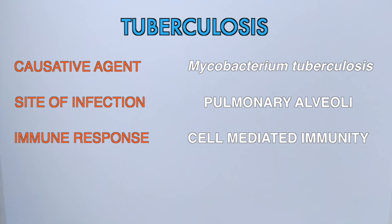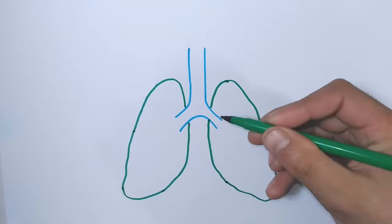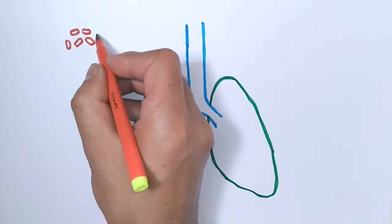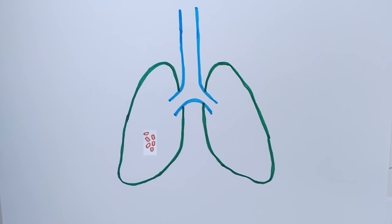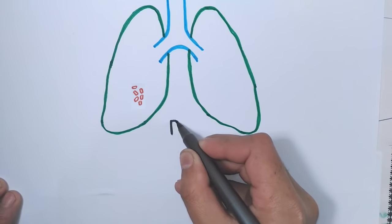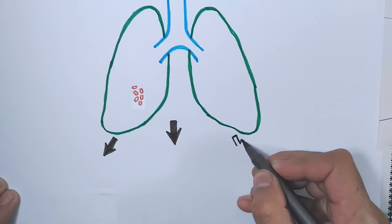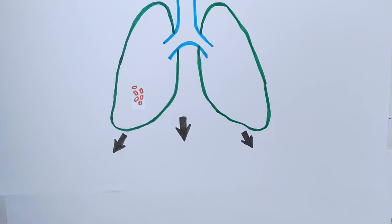Rather, different types of immune cells like macrophages and the chemicals secreted by these macrophages are involved to eradicate the pathogen. Tuberculosis spreads through the air and the mycobacterium gets entry into the lungs and resides in the alveoli, where it starts its primary infection if the immune system fails to eliminate it.